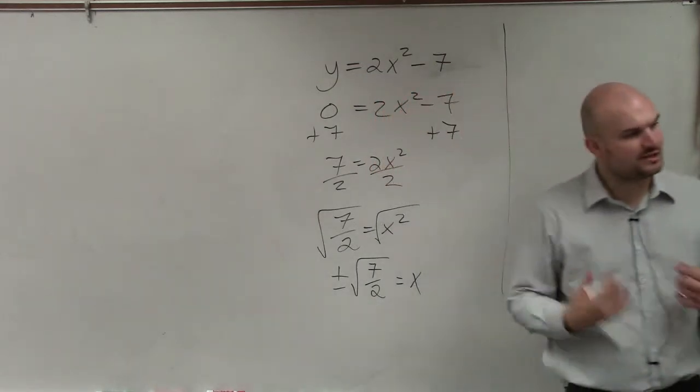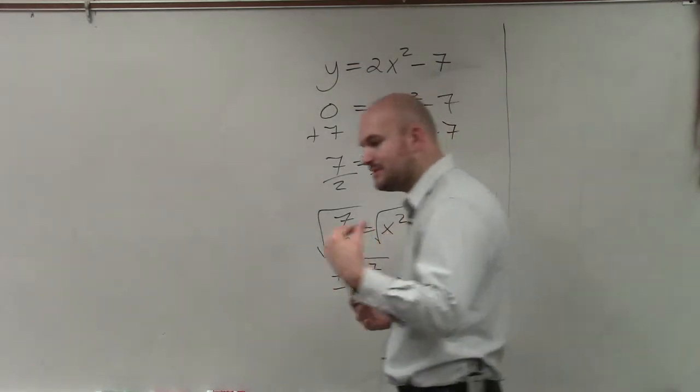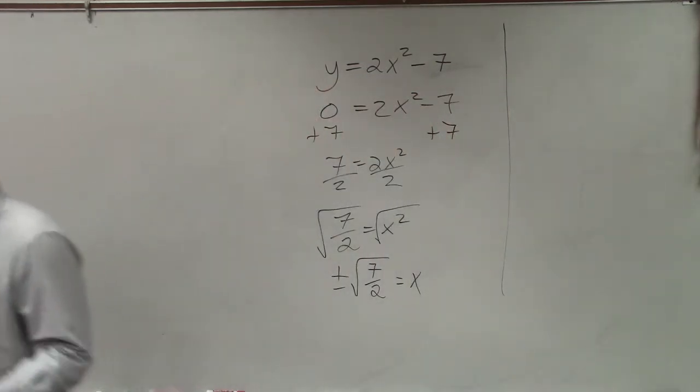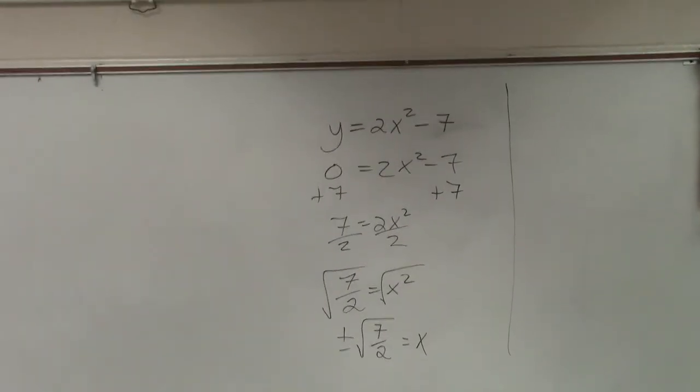So remember, when you're taking the square root of a number, you need to make sure you include the positive and the negative. So your final answer is x equals plus or minus the square root of 7 halves. Do not give me the decimal.